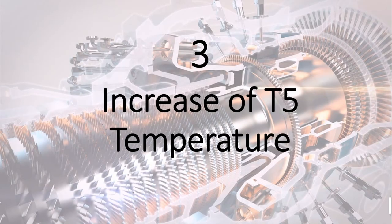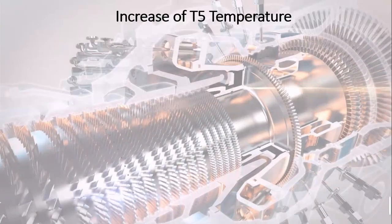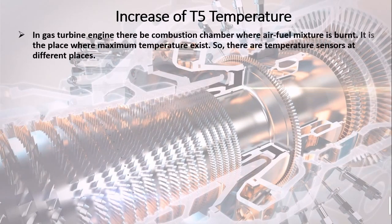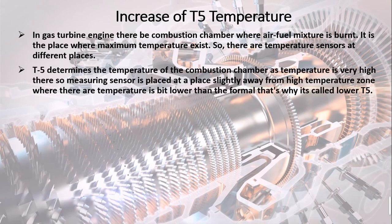Reason 3: Increase of T5 temperature. In a gas turbine engine there is a combustion chamber where the air-fuel mixture is burnt. It is the place where maximum temperature exists, so there are temperature sensors at different places. T5 determines the temperature of the combustion chamber. As the temperature is very high there, the measuring sensor is placed slightly away from the high temperature zone, so the temperature is a bit lower — that's why it's called lower T5.